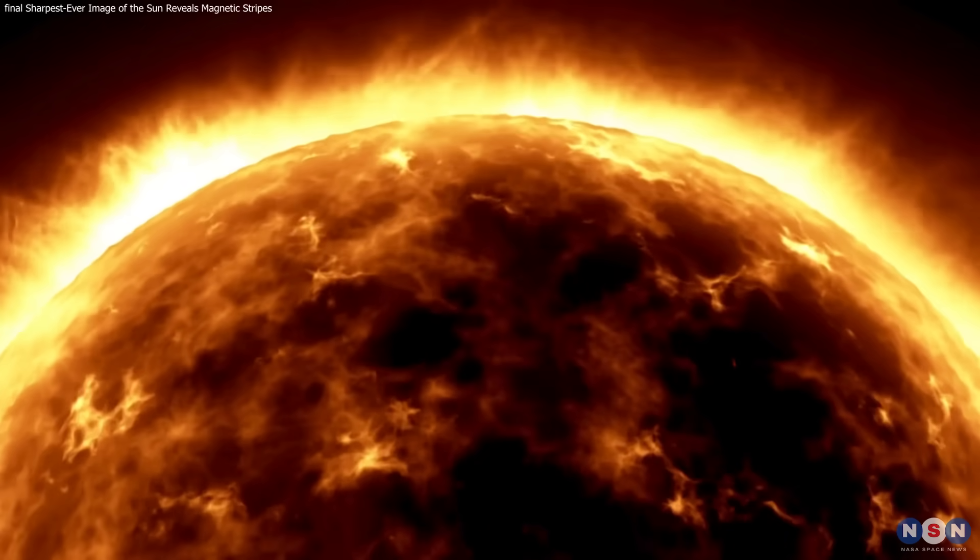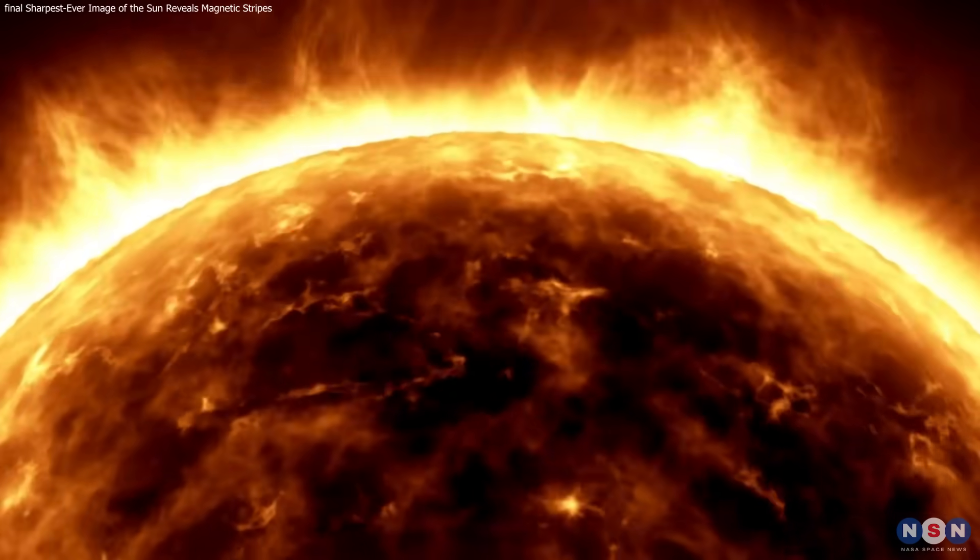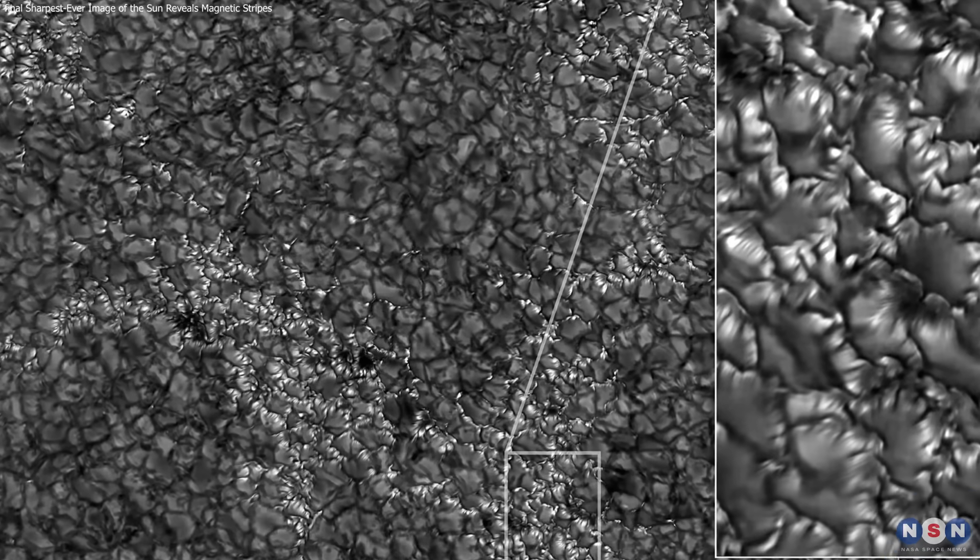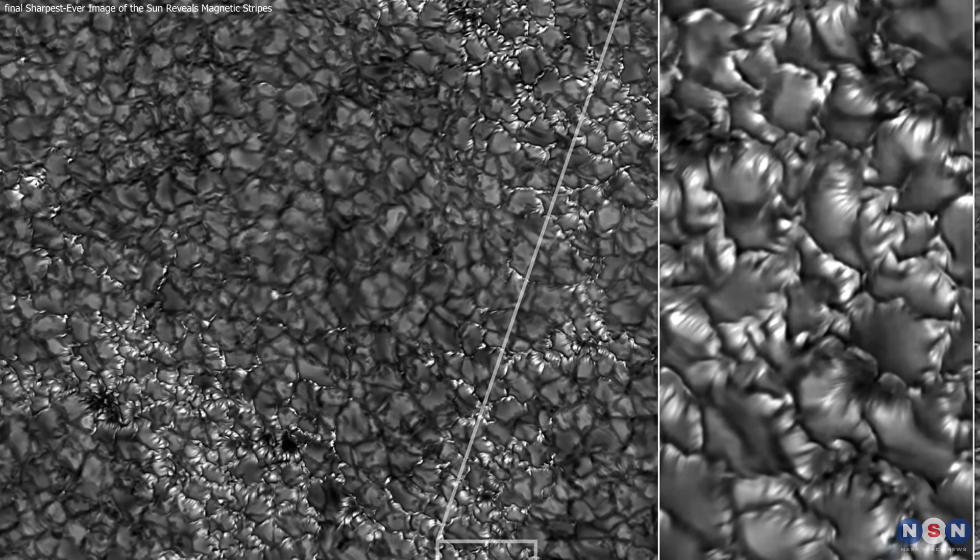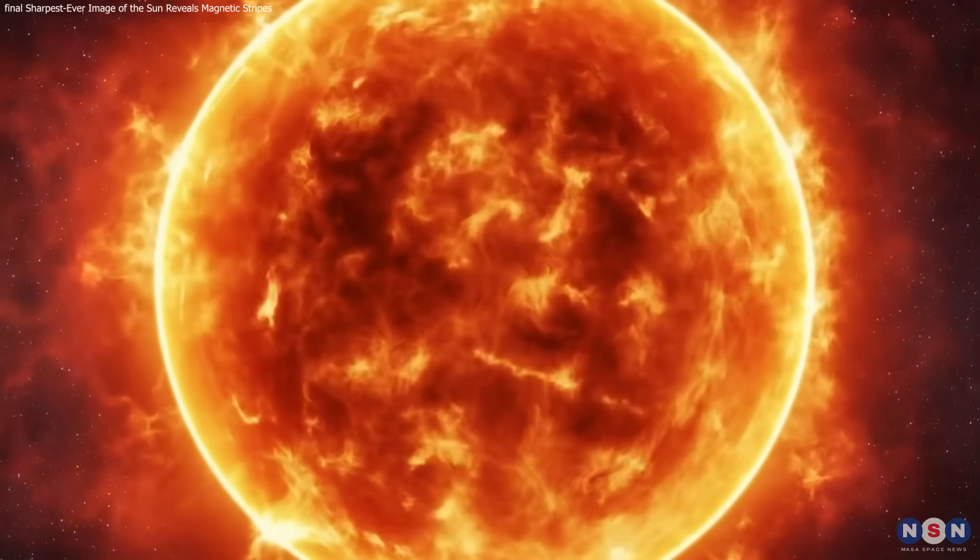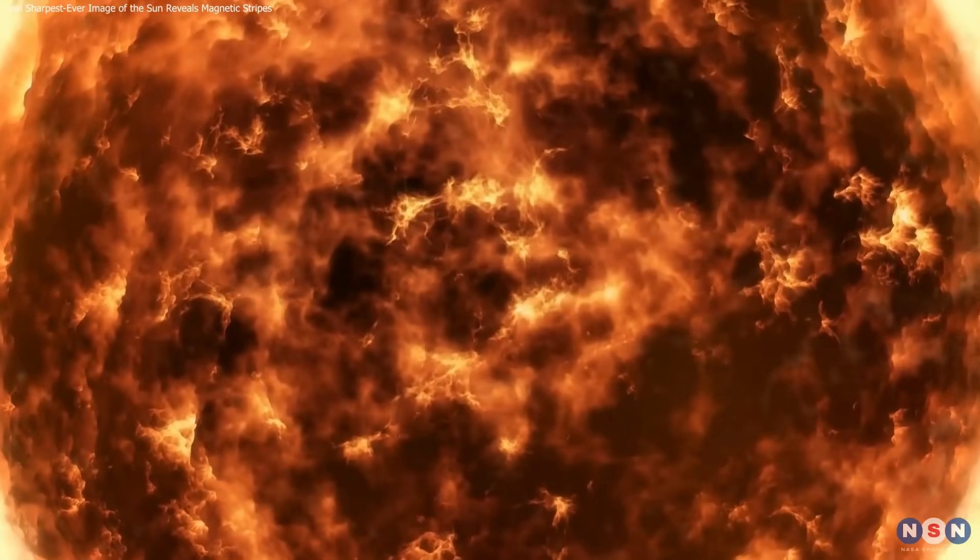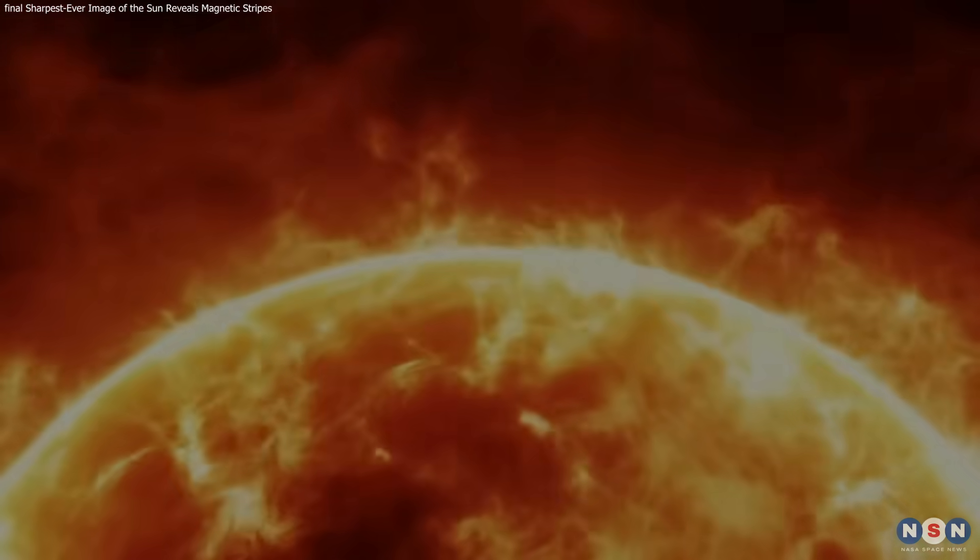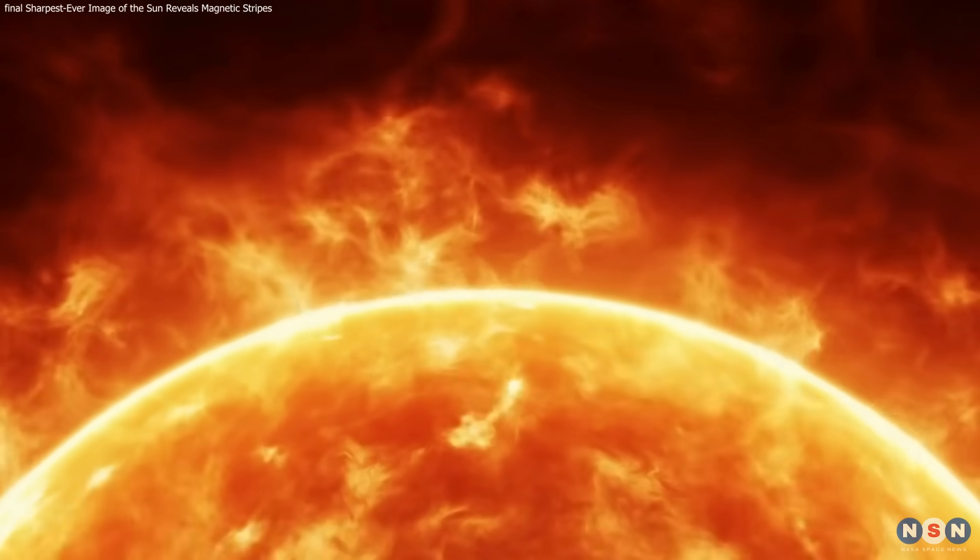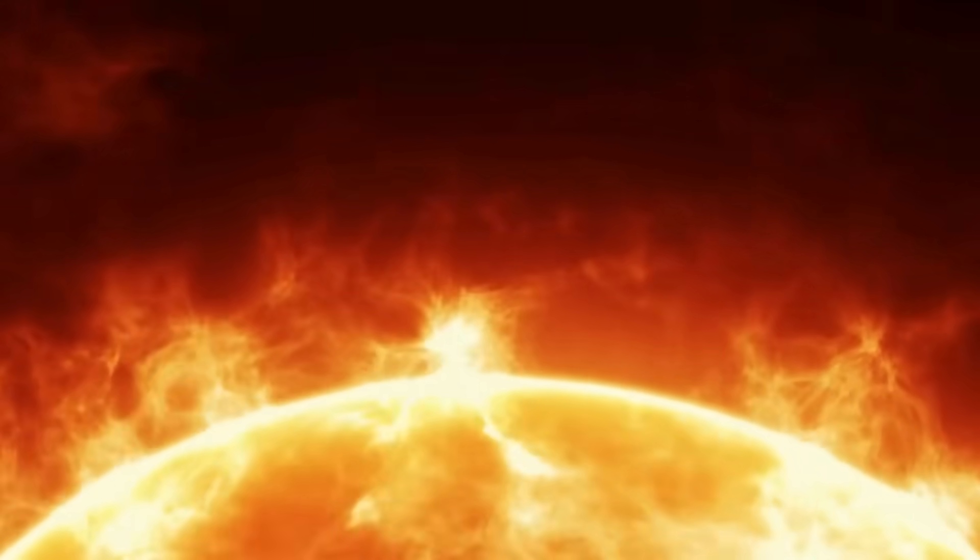The Sun may seem chaotic, but this discovery reveals a hidden order. Ultra-thin magnetic striations, once invisible, show that even the Sun's surface is shaped by fine, structured forces. They raise new questions about the Sun's magnetic depth and complexity. Sometimes, real breakthroughs come not from explosions, but from seeing the quiet details we've missed all along.